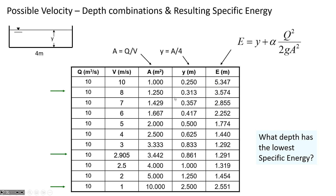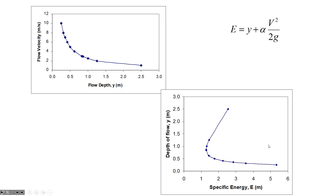To make a specific energy diagram, you generate a table with the same flow rate in each row, a variety of different depths, and compute velocity, area, and specific energy for each. The resulting curve has a minimum point - the critical depth - which is the one with the least specific energy. You'll make this on Excel in the homework, creating what's sometimes abbreviated as an SED, or specific energy diagram.